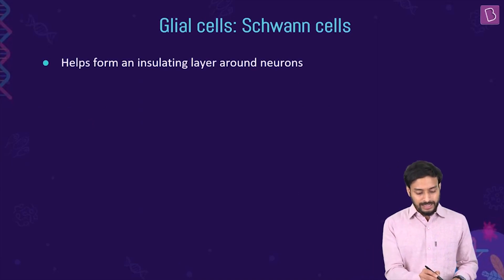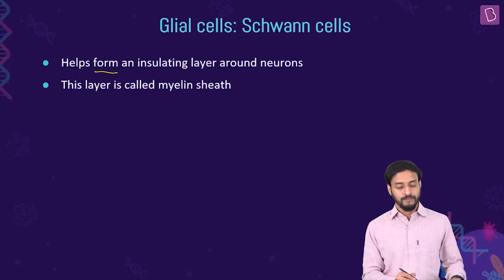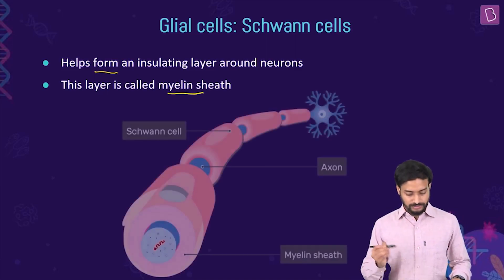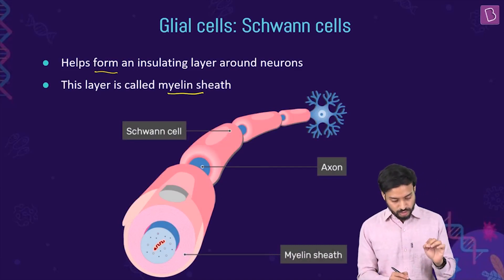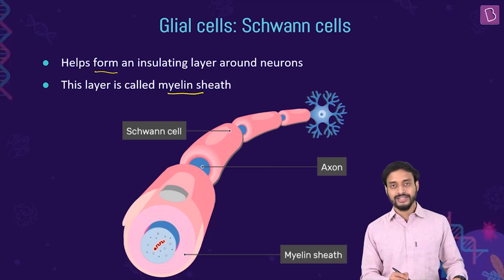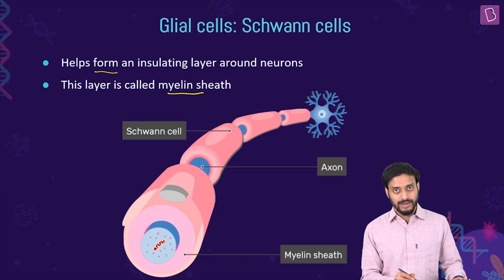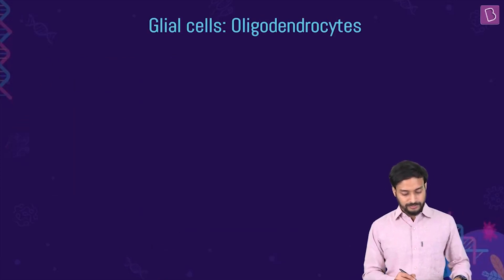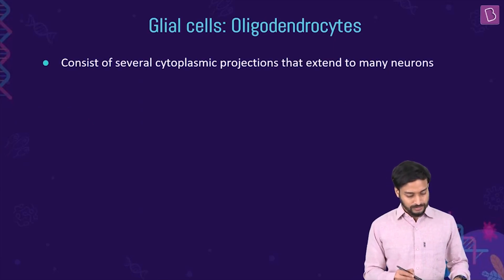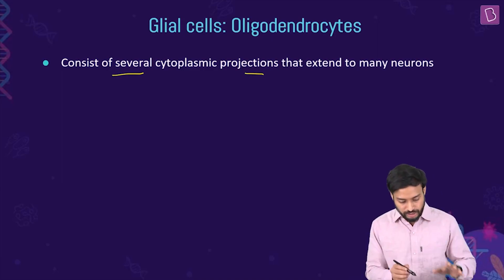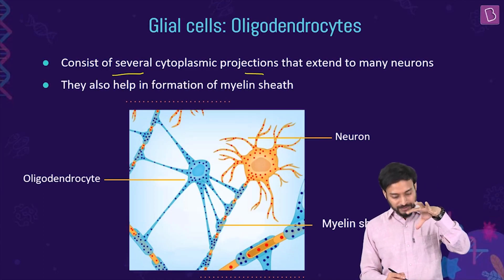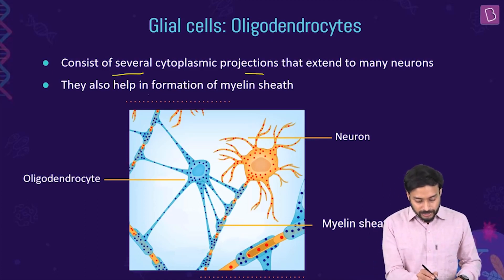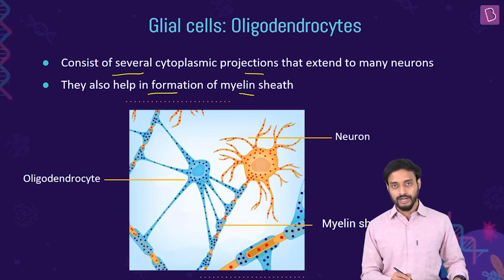Schwann cells help in forming an insulating layer around the neurons called the myelin sheath. Oligodendrocytes consist of several cytoplasmic projections that extend to many neurons. As you can see in the image, these projections extend to many different neurons and also help in the formation of the myelin sheath.